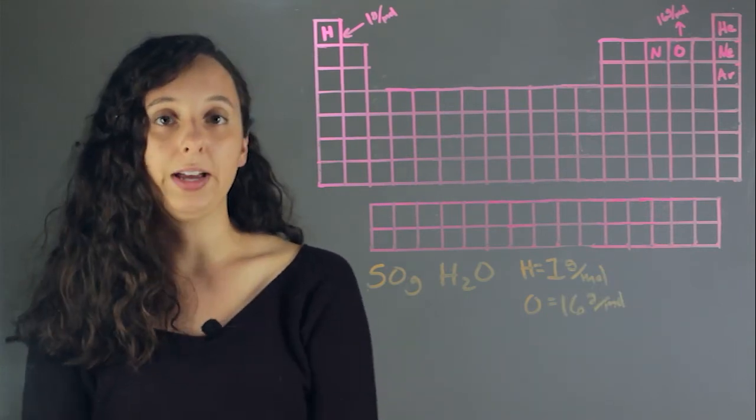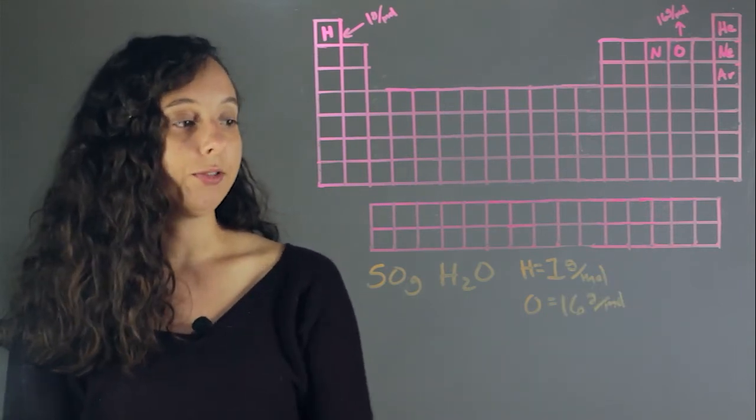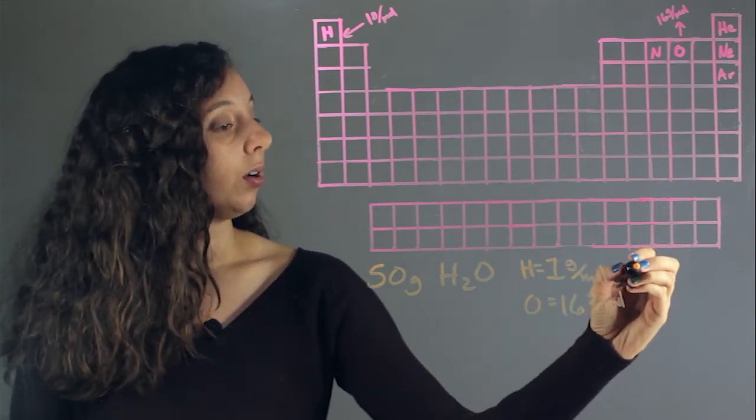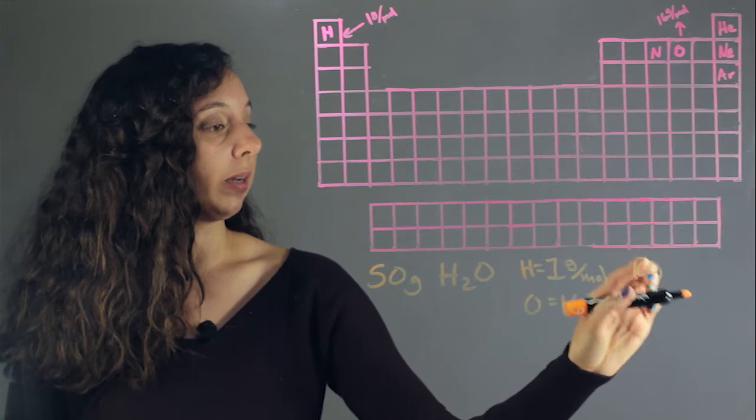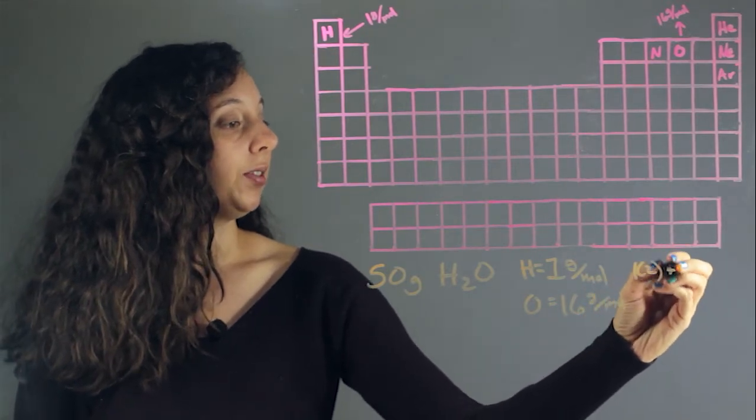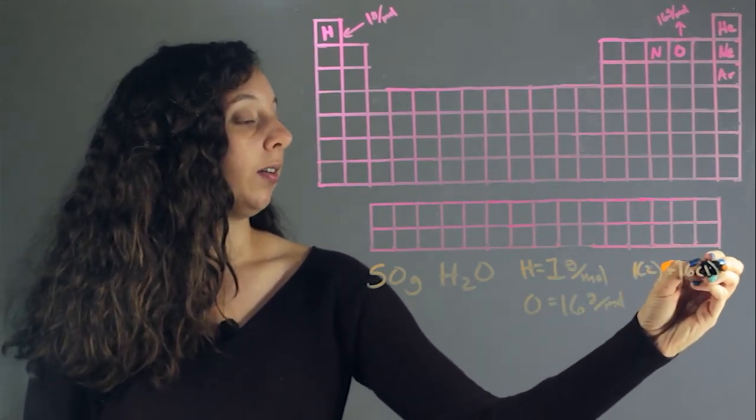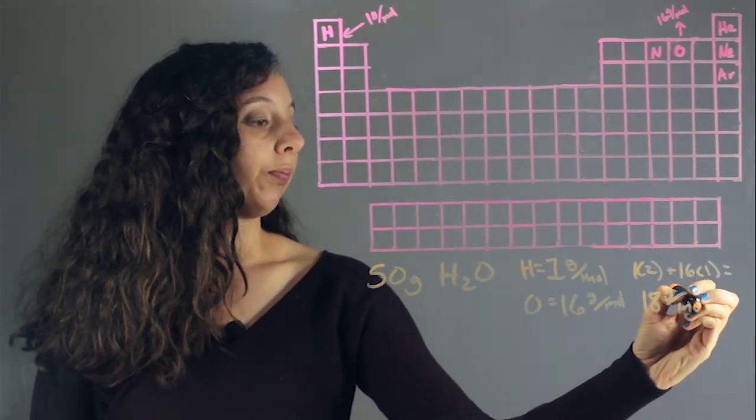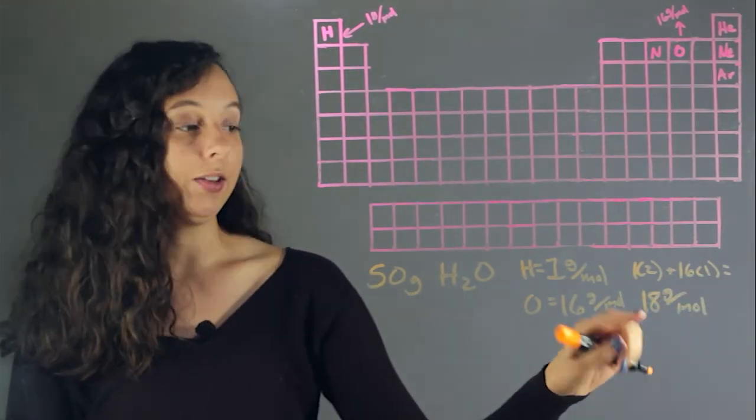So now to get our molar mass of water, we need to have two hydrogens and one oxygen. So our math will look like one times two, that's how many hydrogens we have, plus 16 times one. That equals 18 grams per mole. Now this is our molar mass of water.